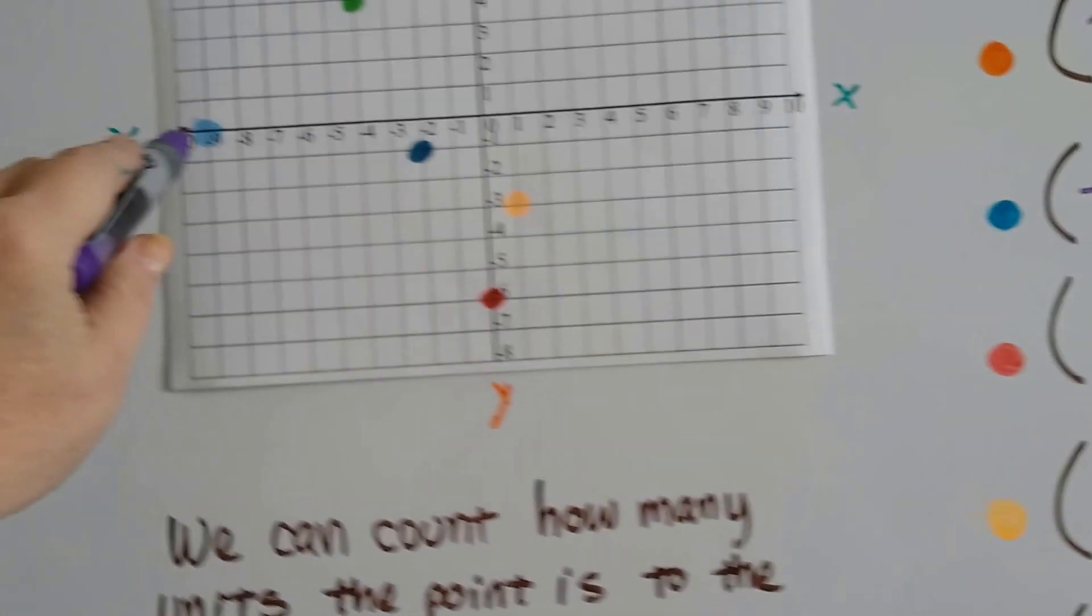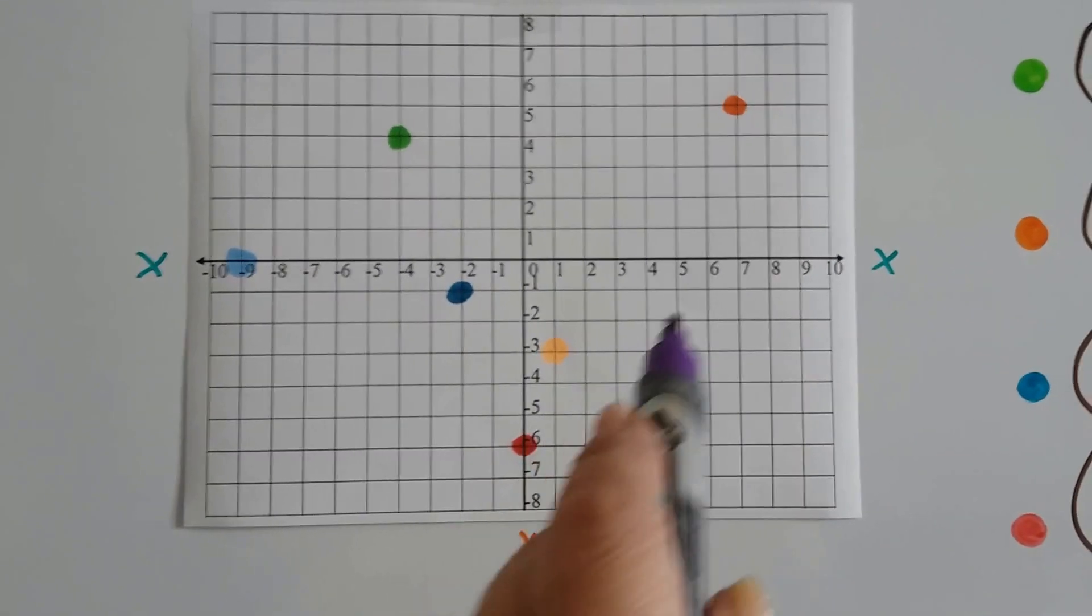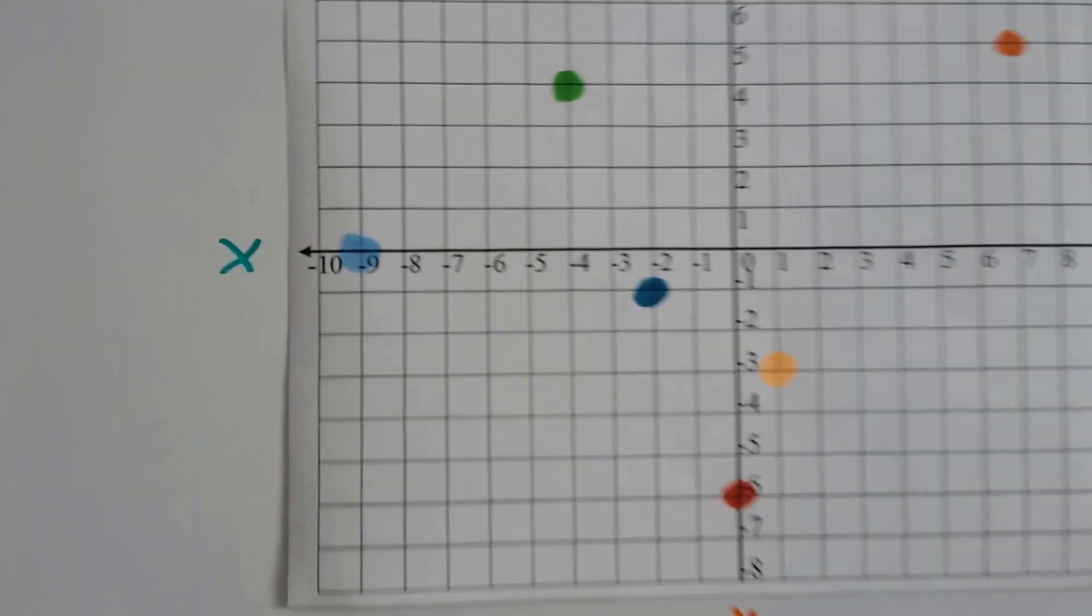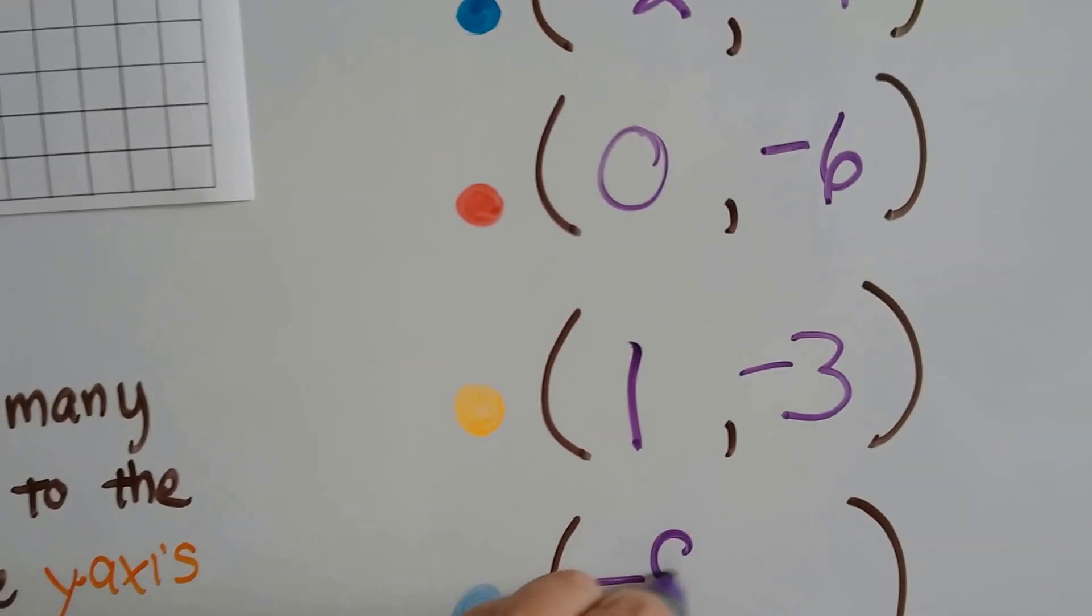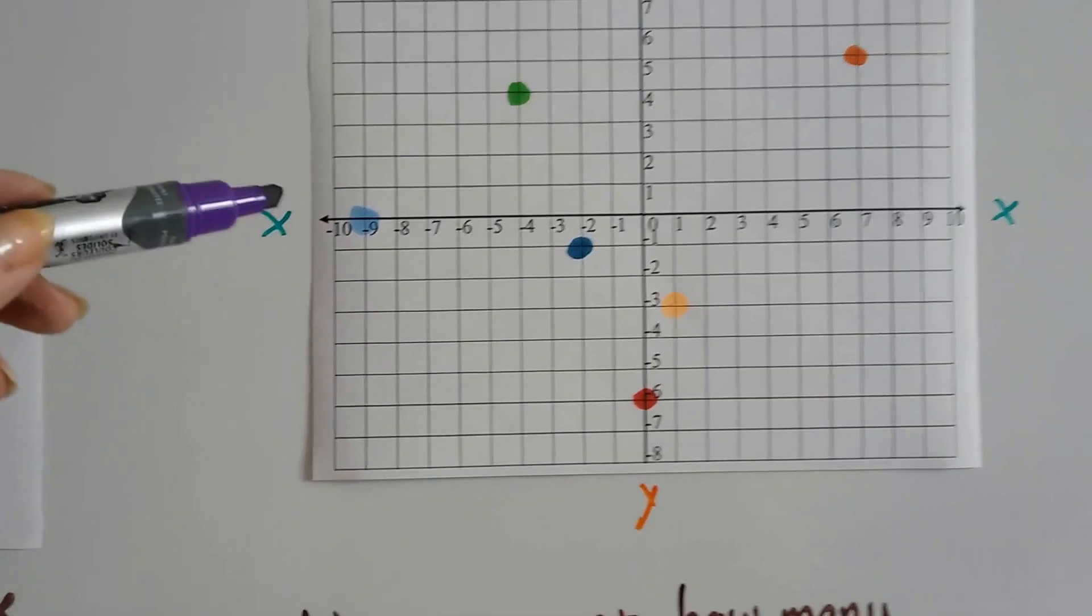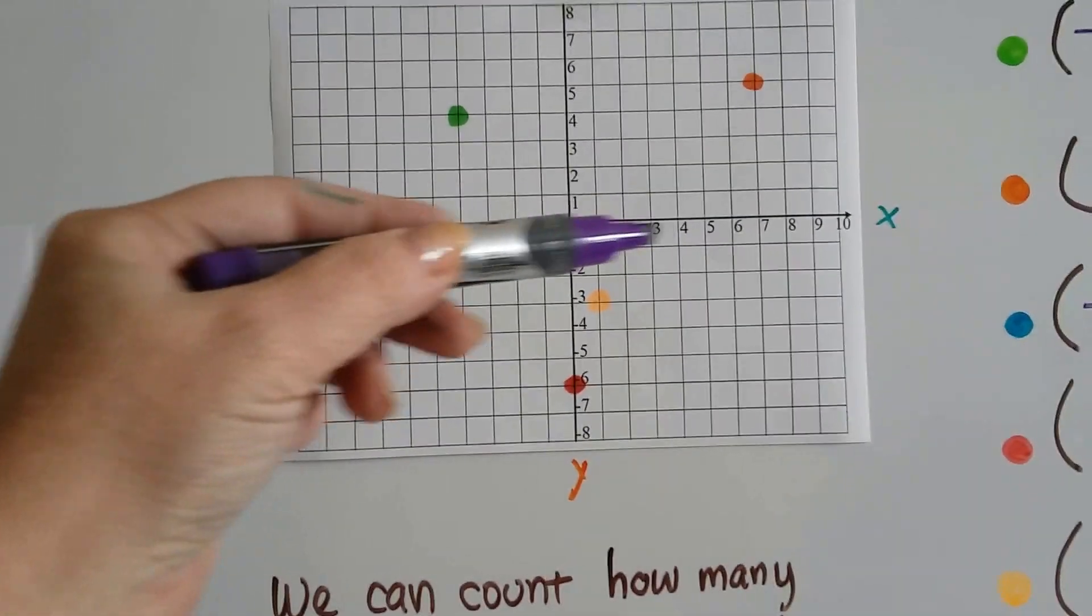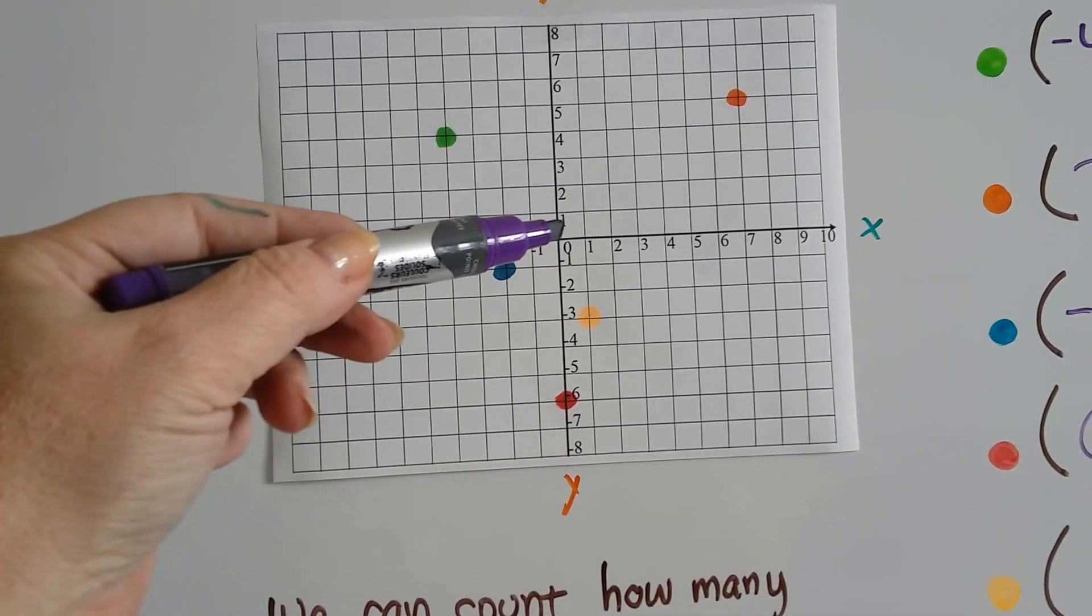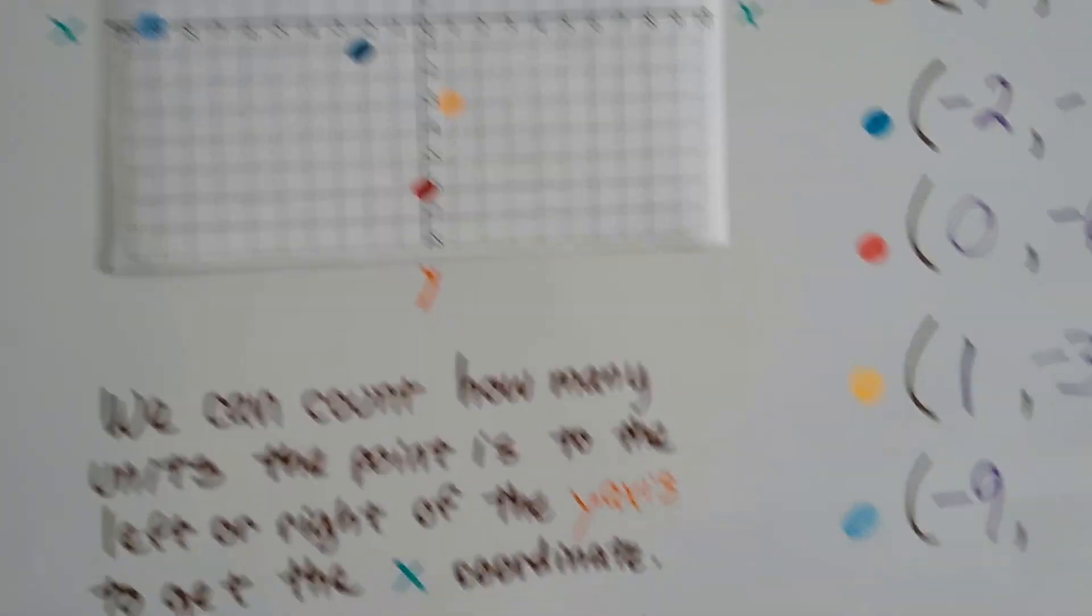What about this light blue one? Where is it located? Well, on the x line, it's actually on the negative 9, isn't it? See that? And for y, it's not going up or down at all. It's right on the line. See? So the y would be 0.